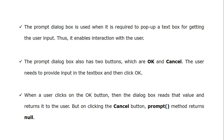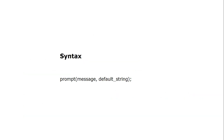As we saw with the alert dialogue box, it has only one button — OK. The confirm dialogue box has 2 buttons: OK and Cancel. The prompt dialogue box also has 2 buttons: OK and Cancel. When the user clicks OK, the dialogue box reads that value and returns it to the user. But on clicking the Cancel button, the prompt method returns null.